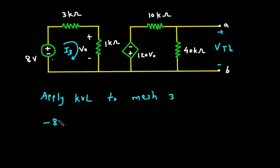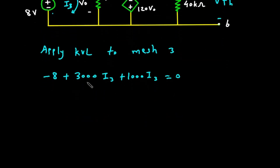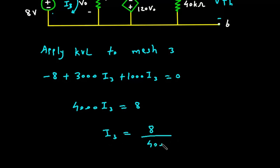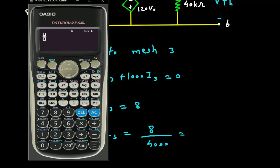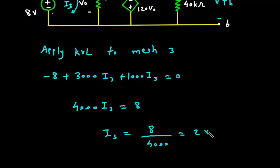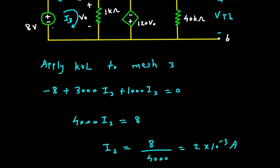Starting from this point, applying KVL to mesh 3: minus 8 plus 3,000 I3 plus 1,000 I3 equals 0. So 4,000 I3 equals 8. Therefore I3 equals 8 divided by 4,000, which is 2 times 10 to the power minus 3 ampere. This is the value of I3.